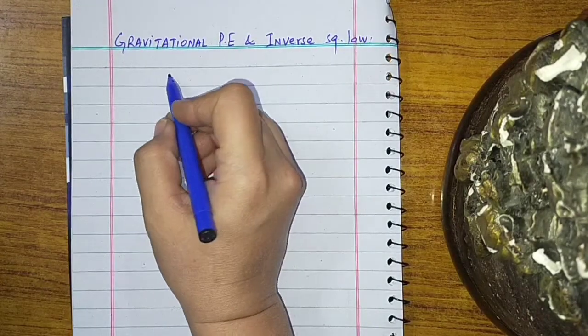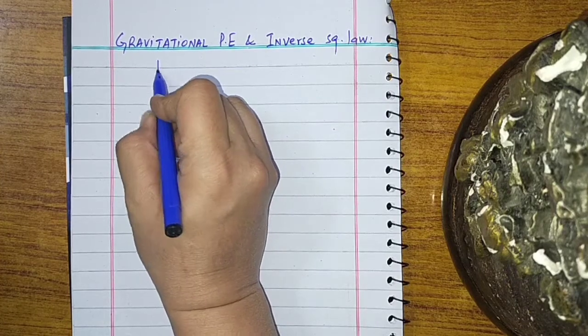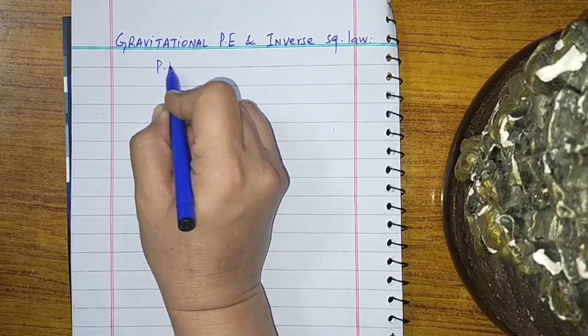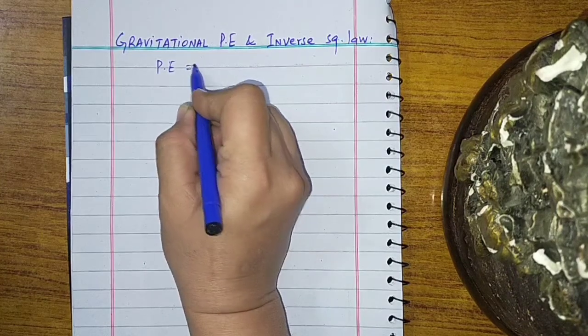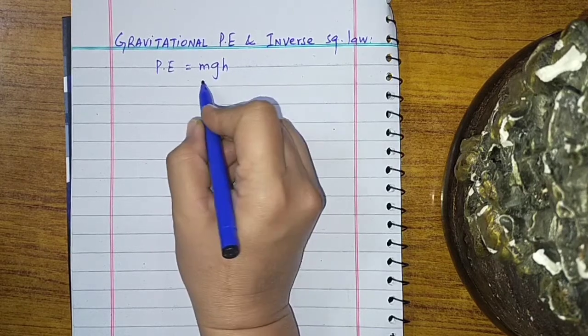We know that potential energy is equal to Mgh — that is, the product of mass, gravitational acceleration, and height. This is the energy due to the height of the body.